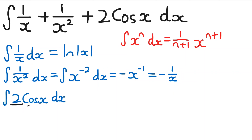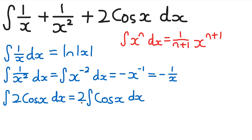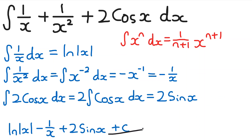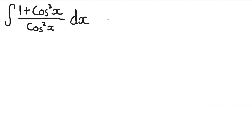For the third term, the integral of 2 cos x — when you have a coefficient in front, you can take it out of the integral and just focus on integrating cos x. The integral of cos x is sin x, so this term gives 2 sin x. Therefore the whole integral is the natural log of |x| minus 1 over x plus 2 sin x, plus c.